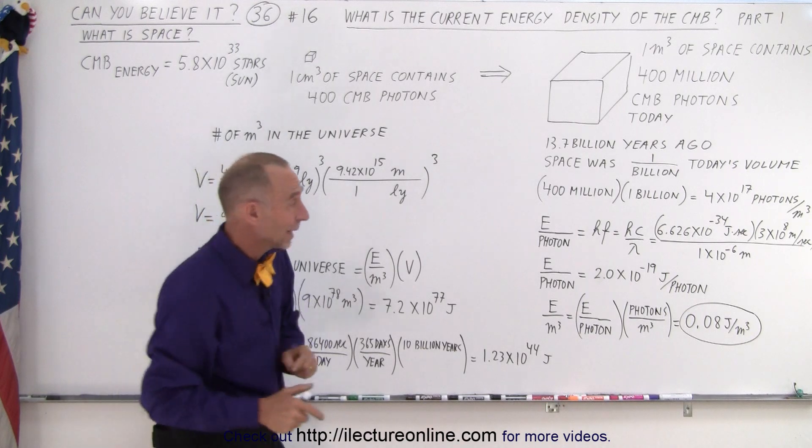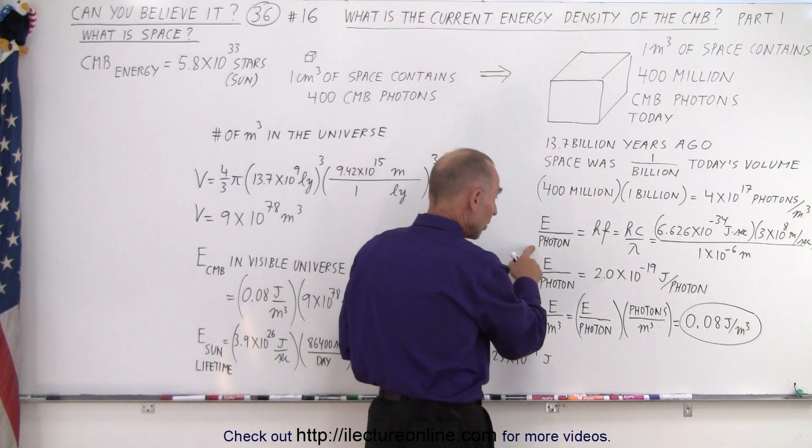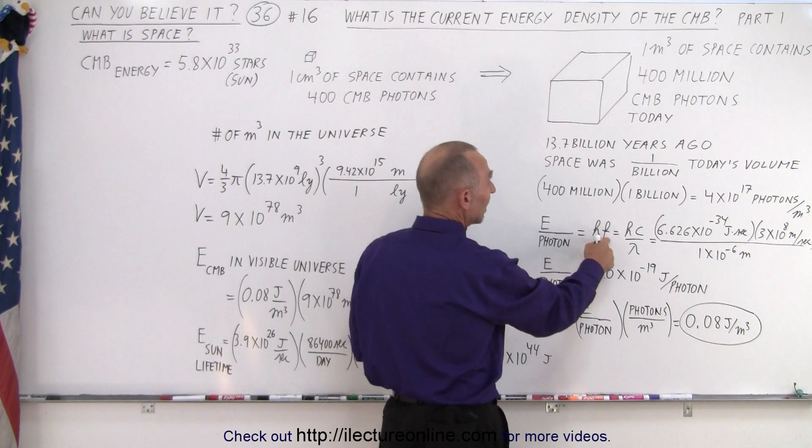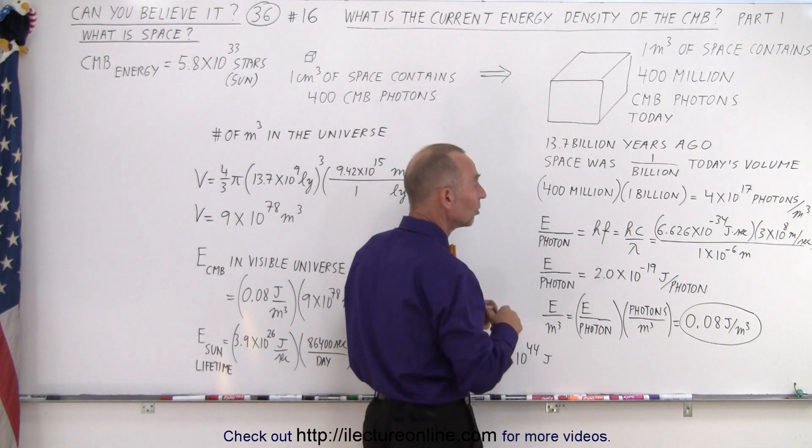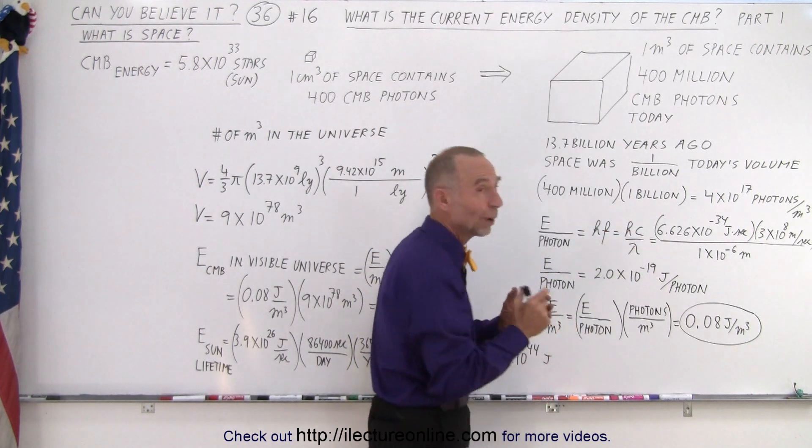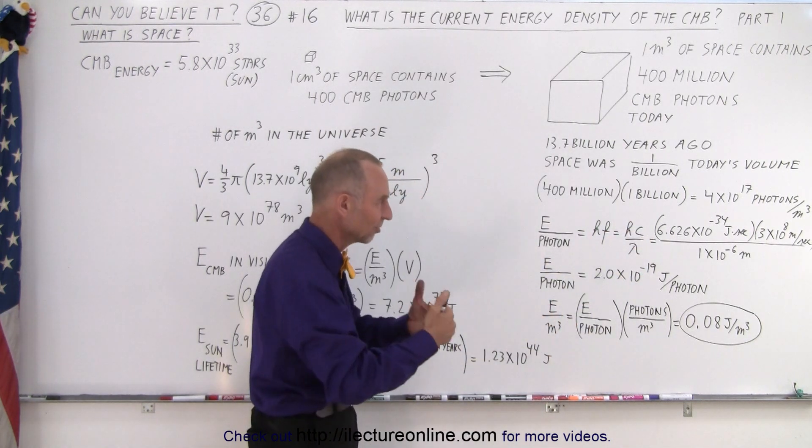We know that the energy back then, per photon, is H times F, where H is Planck's constant, and F is the frequency of oscillation, which is also the same as HC over lambda, the speed of light divided by the wavelength. I like that formula better, because it's easier to calculate.